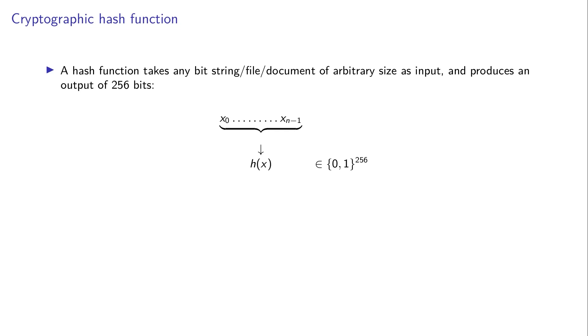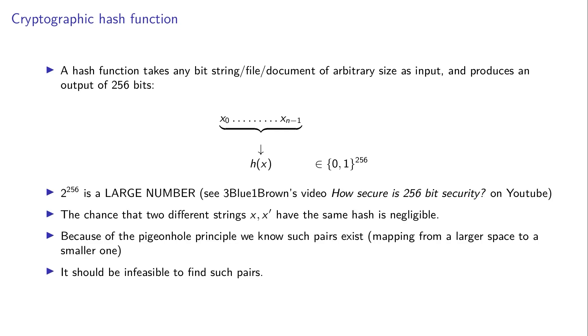And 256 is really really very large numbers. It's about the number of atoms there are in the universe. So the chance that two different strings X and X prime have the same hash is truly negligible.